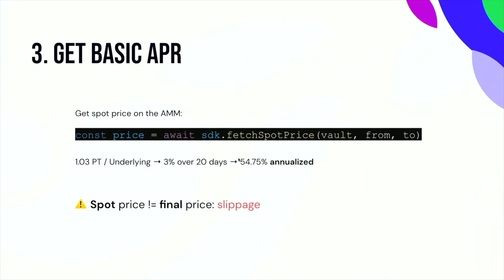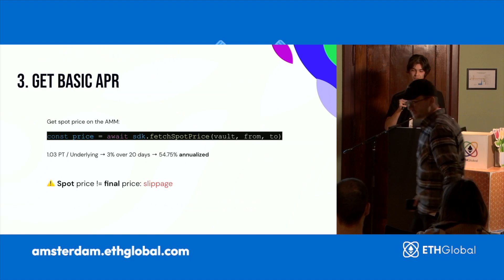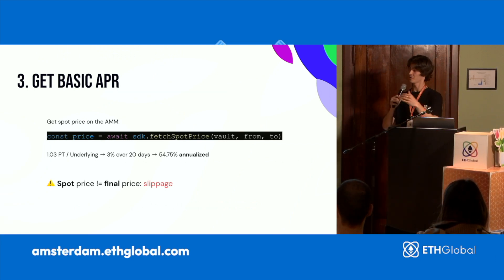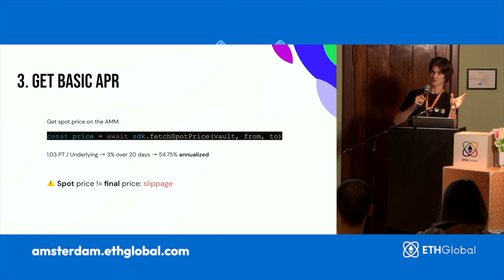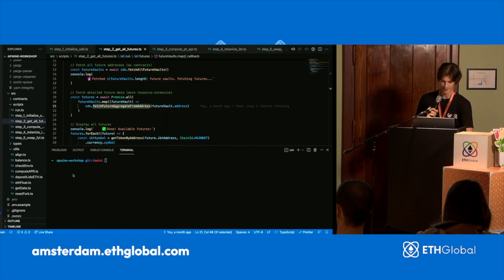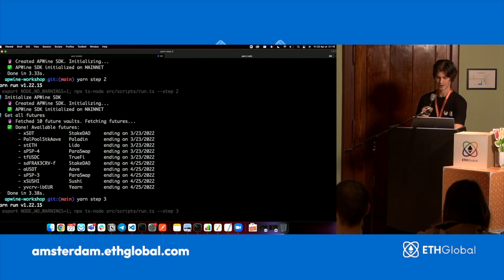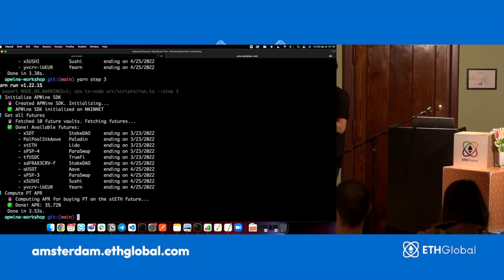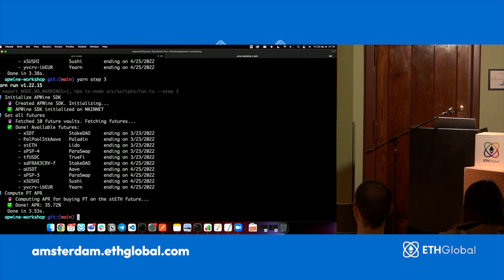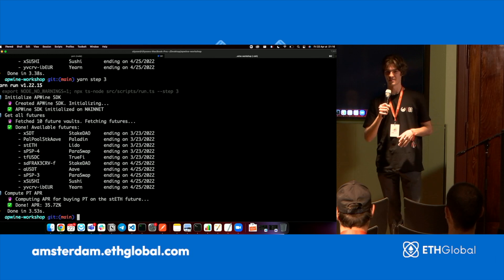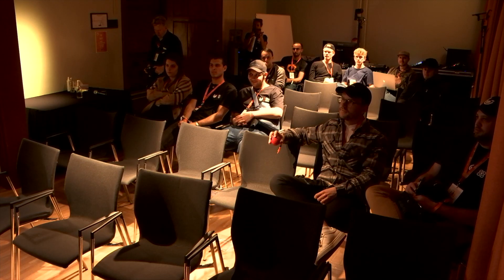Step three is going to be getting the basic APR by buying the PT like I previously described — buying PT at a discount and making sure the ratio is one-to-one, so you basically secure the fixed rate. With this, you just want to call SDK.fetchSpotPrice, passing the specific vault address and then from and to — the two tokens you want to switch. For example, from underlying — say DAI — to PT. At the time of creation of the workshop, we can currently get 35% on the staked ETH future. Have you ever seen 35% on staked ETH? This is something very interesting that you can do with APWine: making optimized yield strategies.